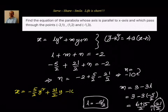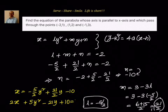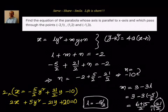If we multiply the equation x equal to minus 5 by 2 times y squared plus 21 by 2 times y minus 10 through by 2, it becomes 2x equal to minus 5y squared plus 21y minus 20, or rearranging: 5y squared plus 2x minus 21y plus 20 equal to 0. That is the equation of the parabola whose axis is parallel to the x-axis passing through the given points.